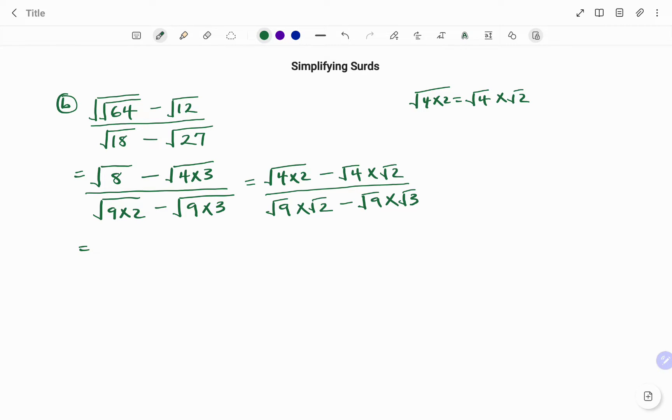So therefore, for our numerator, I have that as 2 root of 2 minus, I'm going to correct that, that's a 3, not a 2. Root of 4 times root of 3, so that will be 2 root of 3 divided by, at the bottom,